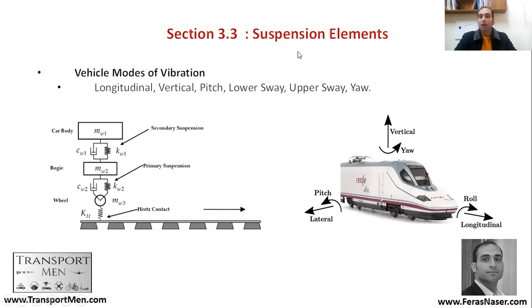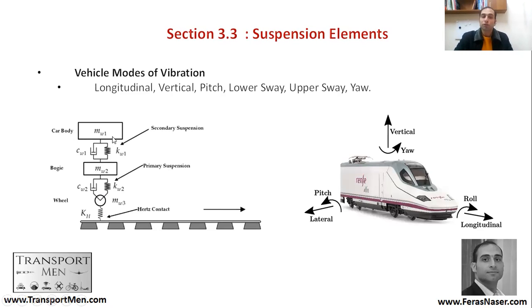Suspension elements: the contact patch behaves like a Hertzian spring with a spring coefficient. The load is then transferred to the primary suspension system via the bogie — which has a mass and connects the axles together — then to the secondary suspension system and finally the car body, which also has mass. The secondary suspension is responsible for removing low-frequency vibrations, the primary suspension removes high-frequency vibrations, and the Hertzian contact takes all load from the vehicle or infrastructure.